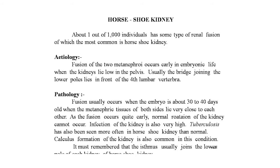As fusion occurs quite early, normal rotation of the kidney cannot occur. Infection of the kidney is also very high. Tuberculosis has also been seen more often in horseshoe kidney than normal. Calculus formation is also common in children. The isthmus usually joins the lower pole of each kidney — only on rare occasions are the upper poles fused.